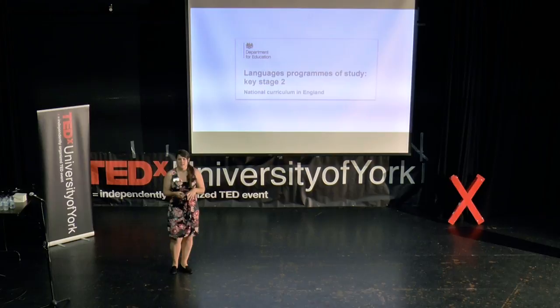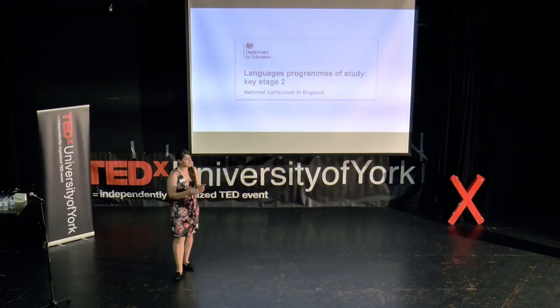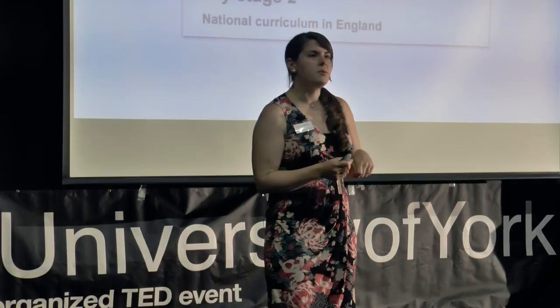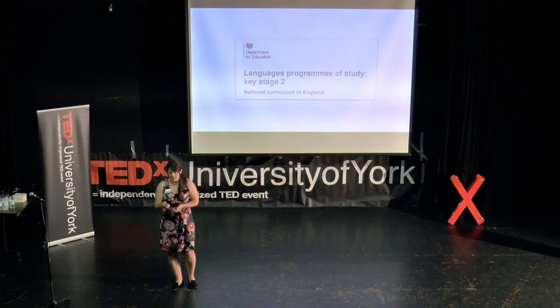In 2014, languages became a compulsory subject in primary schools, so this means that from the age of seven all children are now learning a language in school. Whilst this is a hugely positive step towards expanding language education within the UK, it's also brought with it its own difficulties, particularly for schools in figuring out how they can go about implementing this new curriculum. Traditionally within primary schools, language teaching has focused on teaching vocabulary — words and chunks of language — through songs, poems, and different classroom activities and games. However, a key requirement within the new curriculum is that children are able to understand grammar relevant to whichever language they're learning.